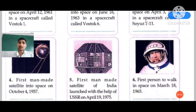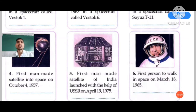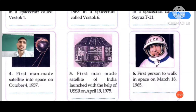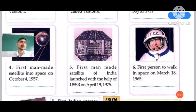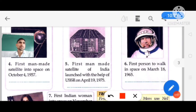In the picture there is a man-made satellite. It went into space on October 4, 1957, and its name is Sputnik 1. Question number five is about the first man-made Indian satellite — you have to choose answer D from the help box.